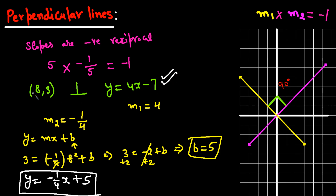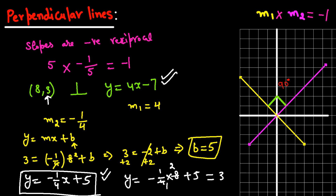We can verify: plugging in x = 8, y = (-1/4)(8) + 5 = -2 + 5 = 3. That matches our point, so the equation is correct. The steps are: find the slope, find the y-intercept, then plug into the standard equation.